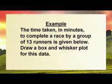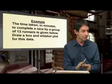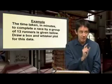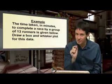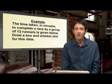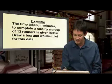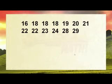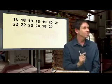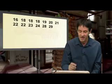The time taken in minutes to complete a race by a group of 13 runners is given below and we've got to draw a box and whisker. How many runners are there? 13 — is that odd or even? It's odd. Now there's a big story around odd and even. Sometimes a quartile may be part of the data set, and sometimes it's not. The times are 16, 18, 18, 18, 19, 20, 21 and so on up to 29 — that's 13 scores. They've been arranged from smallest to biggest, which you must always do.